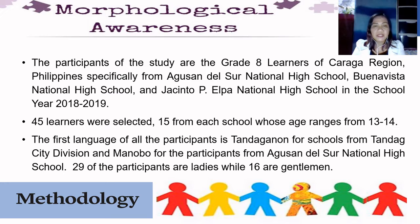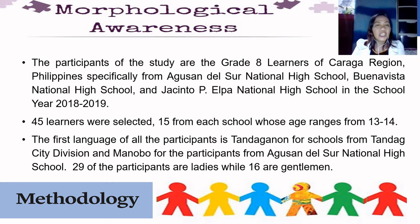45 learners were selected, 15 from each school, whose age ranges from 13 to 14. The first language of all the participants is Tandaganan for schools from Tandag City Division and Manobo for participants from Agusan del Sur National High School. 29 of the participants are female while 16 are male.